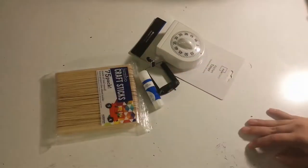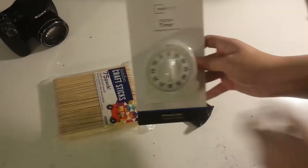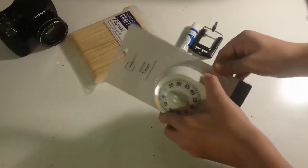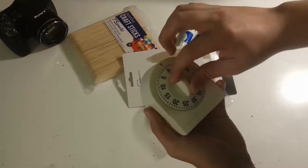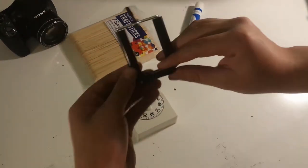So I went to Walmart and I picked up a few things. I got this cheap $2 kitchen timer and along with another cell phone mount.